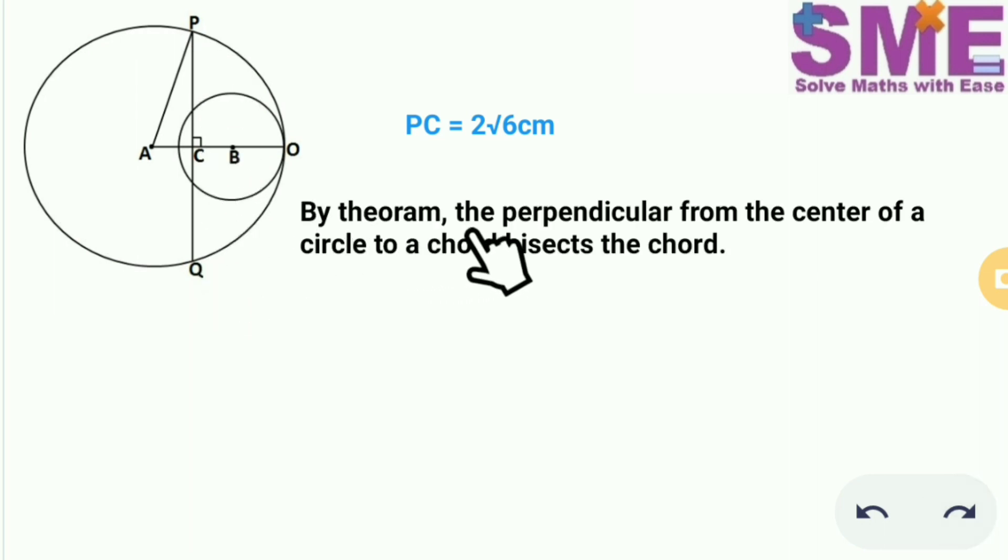By theorem we know that the perpendicular from the center of a circle to a chord bisects the chord. So the perpendicular AC which is perpendicular to chord PQ will bisect this chord PQ into 2 separate halves.